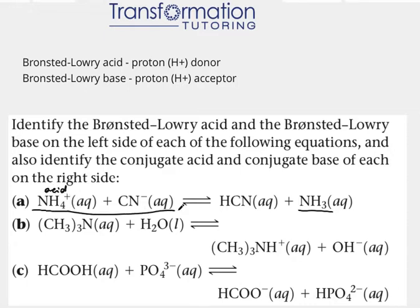Now whatever it becomes on the other side will be its conjugate, its conjugate pair, and so if you have an acid on one side, on the left side, you will have conjugate base on the right side. So we have NH4+ is our Bronsted-Lowry acid because it lost the hydrogen and NH3 is its conjugate base.